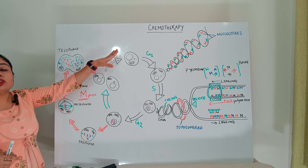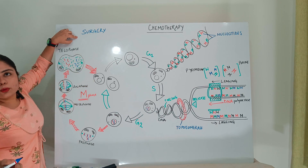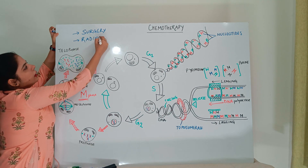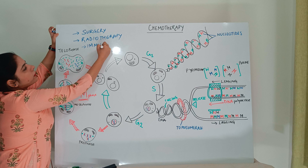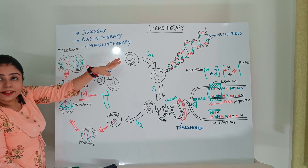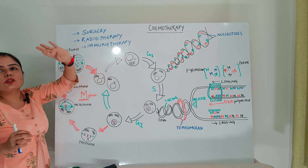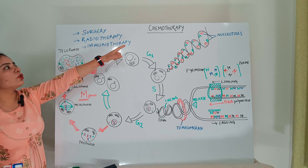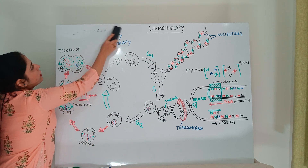Apart from chemotherapy, other treatments commonly used for cancer include surgery — removal of the tumor or cancerous mass from the body. Then we have radiotherapy, where radio waves are used for treating cancer, and immunotherapy. Chemotherapy is kind of an adjunct therapy given alongside these treatments to suppress or directly kill whatever remaining cells are left after the main mass has been cleared.